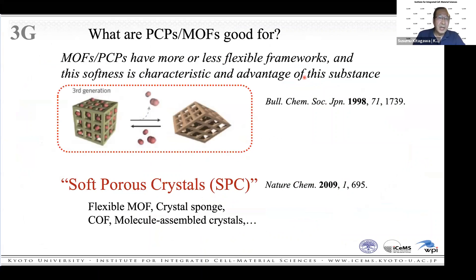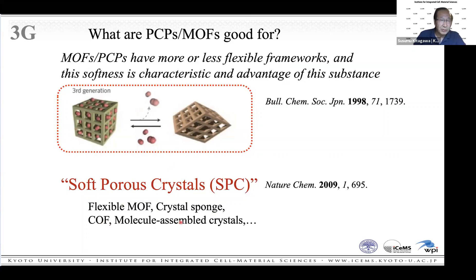This means MOF/PCPs have more or less flexible frameworks. The softness is a characteristic and advantage of this substance — that is the answer to what PCPs are most good for. Softness is a very important character. We call these materials 'soft porous crystals.' This type of behavior is observed even in COF molecule-assembled crystals, flexible MOFs, and crystal sponges.